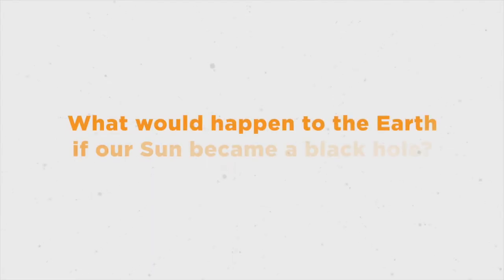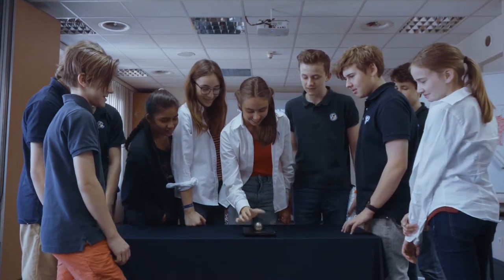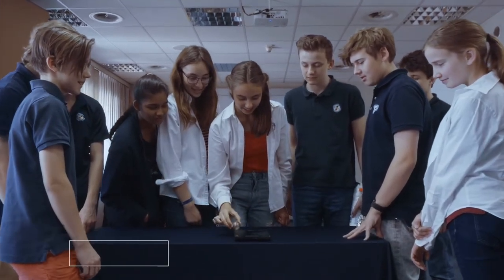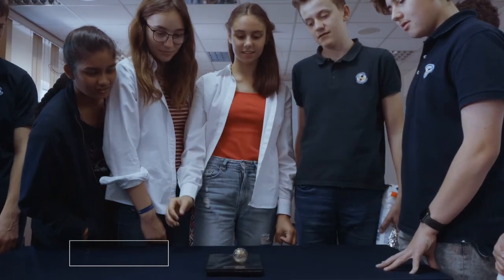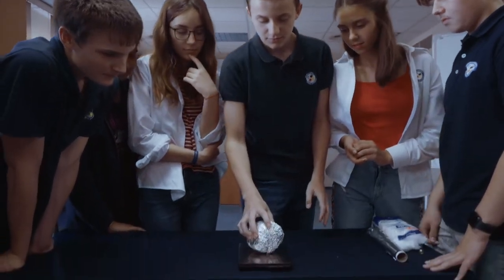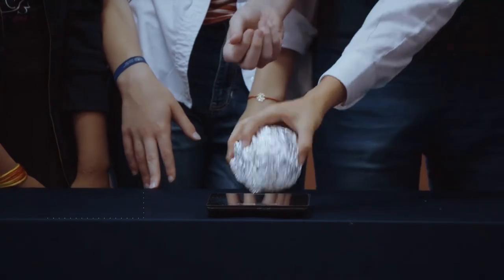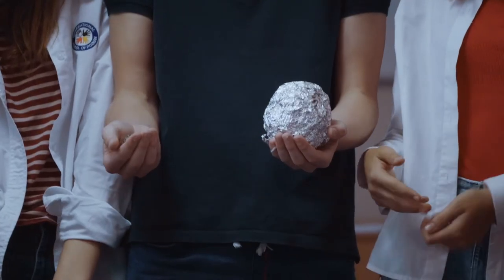What would happen to the Earth if our sun became a black hole? Well firstly, our sun wouldn't turn into a black hole because it's not massive enough. But hypothetically, let's see what would happen if we replaced our sun with a black hole of the same mass. The heavy marble represents a black hole. Let's check its weight. The aluminum ball represents our sun. In this scenario, the mass of the sun and that of the black hole are equal, but the sun is much bigger than the black hole.